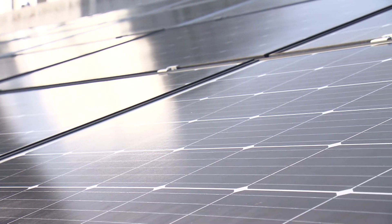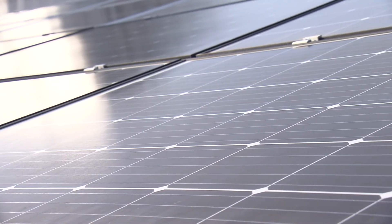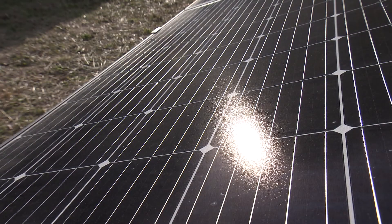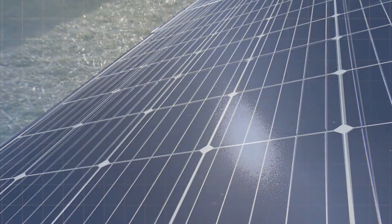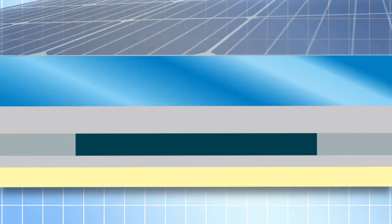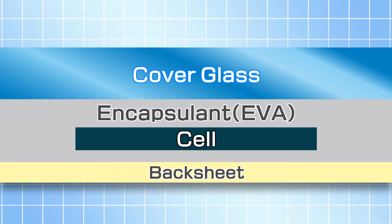Solar panels commonly installed on the roof of ordinary households are called PV modules. The collected sunlight or solar energy is converted into electricity within the solar cells in the PV modules. PV modules are assembled by inserting the PV cells, also known as solar cells, between a glass plate and back-side foil in order to protect them from damage due to natural phenomena such as wind and rain.